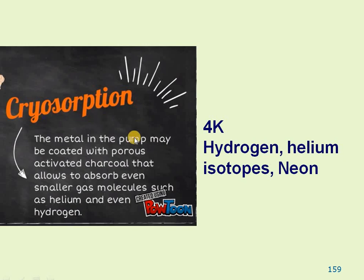Finally, cryosorption handles remaining molecules like neon, helium, and helium isotopes (He-3, He-4). Inside the pump, surfaces are coated with activated charcoal or zeolite materials at very low temperatures of around 4 Kelvin. These materials have high affinity to catch and hold helium-like molecules. Some hydrogen molecules are deposited by entrainment; the remaining hydrogen molecules are also deposited in the cryosorption stage.